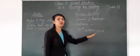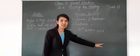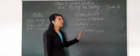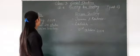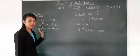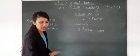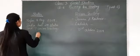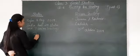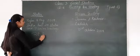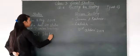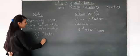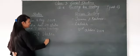So that change happened in 2019. Now we have 28 states and 9 union territories.